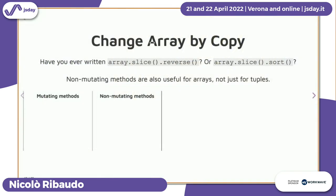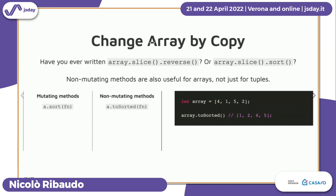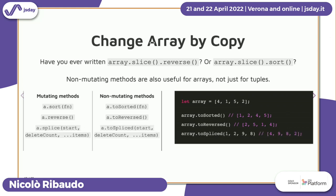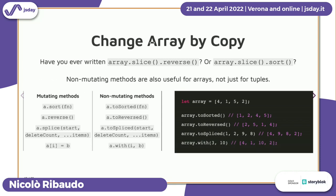The Change Array by Copy proposal introduces four new methods to do what those four mutable methods do, but in an immutable way. Instead of Array.sort, we have Array.toSorted, which returns a new sorted array without modifying the original. Similarly, we have Array.toReversed instead of Array.reverse, Array.toSpliced instead of Array.splice, and Array.with to create a new array with a specific element updated. These new methods are introduced on arrays and they would also be supported on tuples, so that tuples and arrays have the same capabilities.